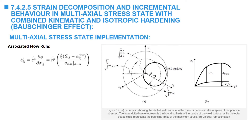The associated flow rule is still used, substituting in the new yield function. In this case, the derivative of the yield function with respect to sigma_ij is equal to 3 over 2 times S_ij divided by the von Mises stress, but using sigma minus the deviatoric components of the back stress tensor.